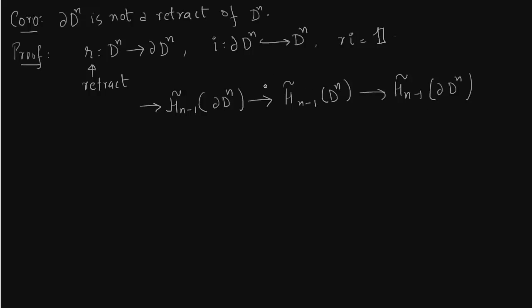So both ends of this sequence have integers. Again I am writing I star for the map induced from inclusion and R star for the map induced from retraction.